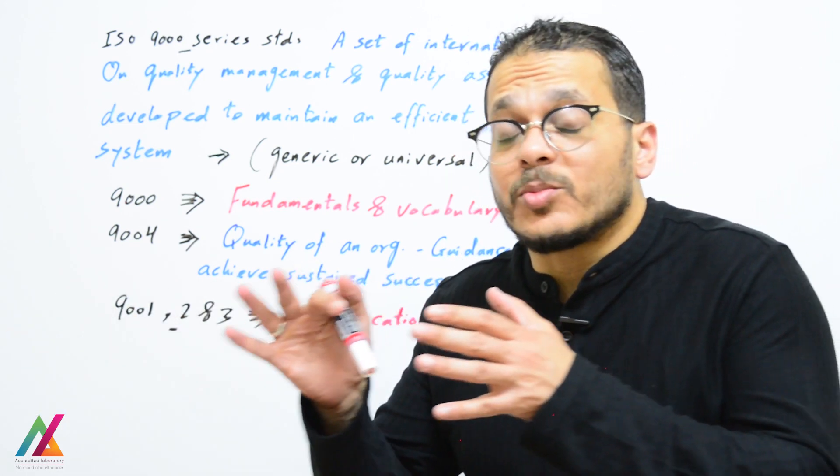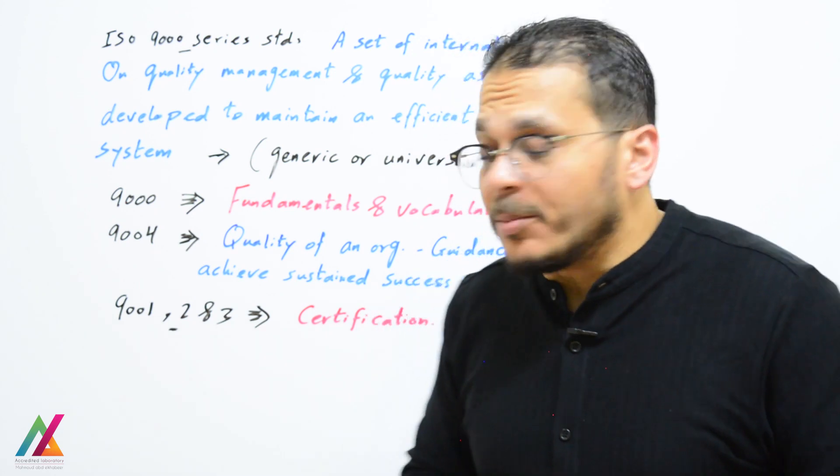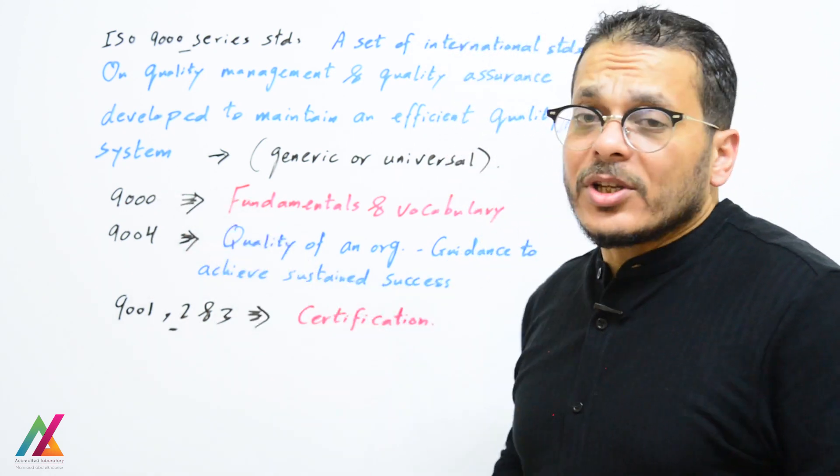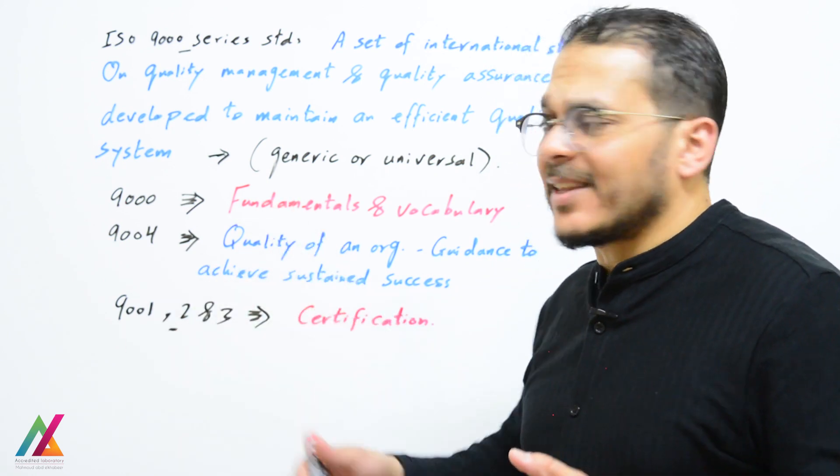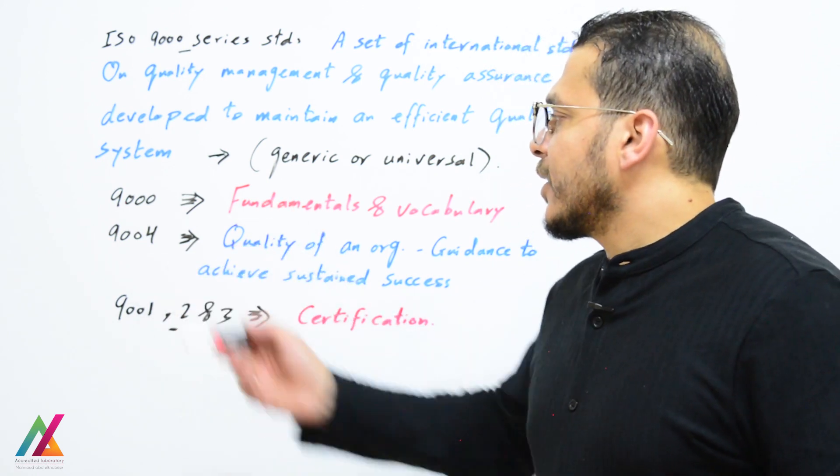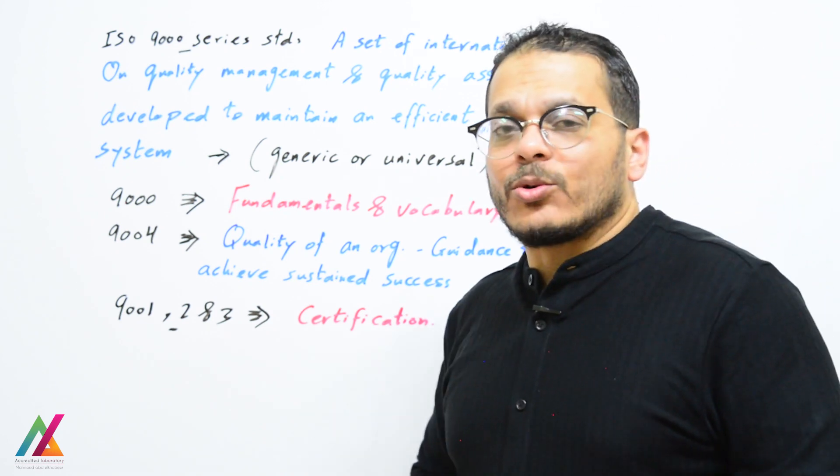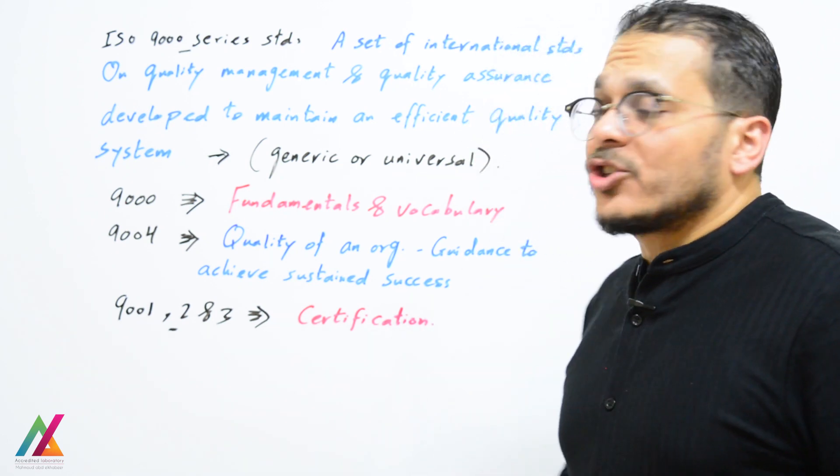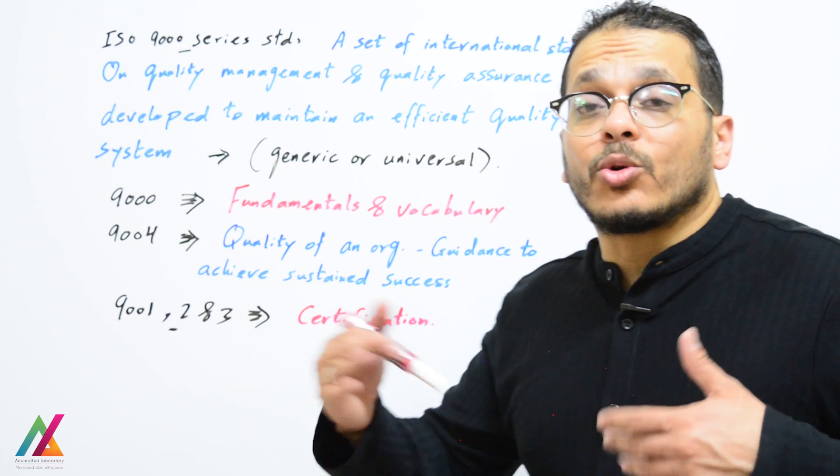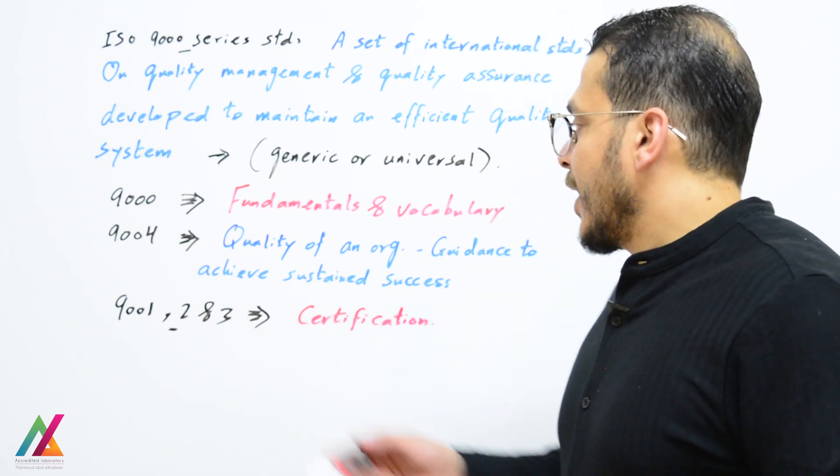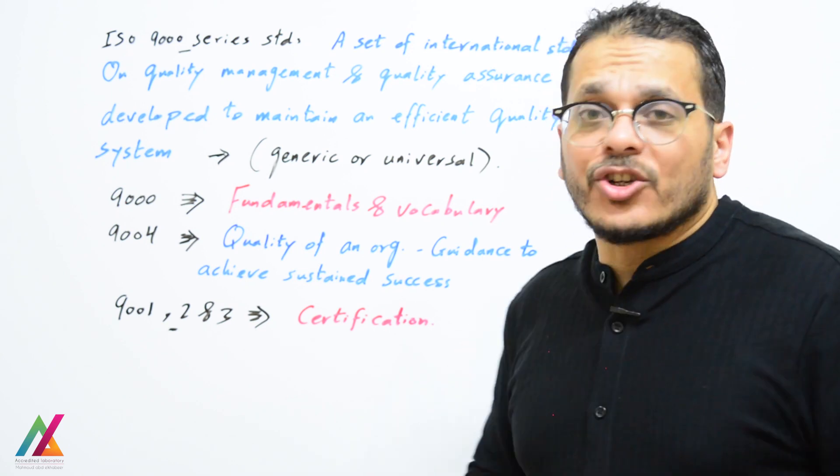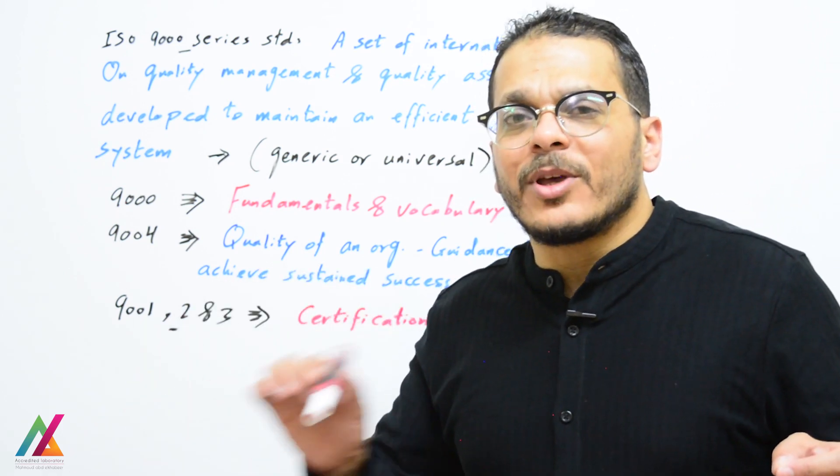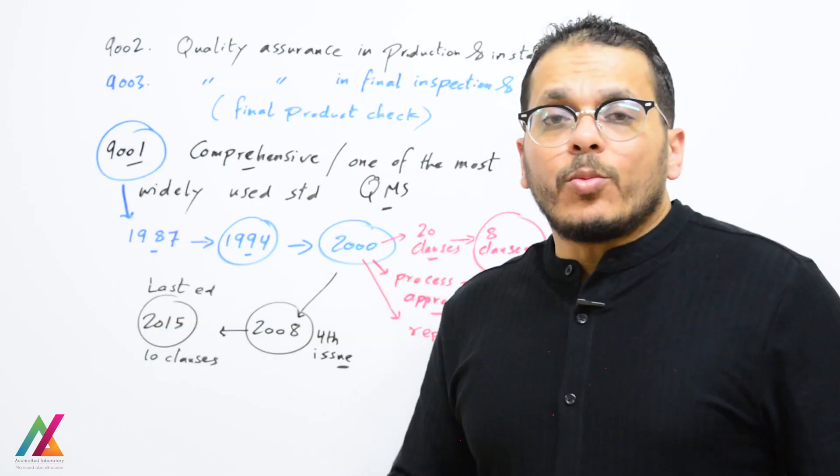ISO 9000 was for fundamentals and vocabulary—all definitions are in this standard till now. ISO 9004 covers quality of an organization, guidance to achieve sustained success and continuous improvement. ISO 9001, 9002, and 9003 were for certification, but the difference between them is in the scope of certification.